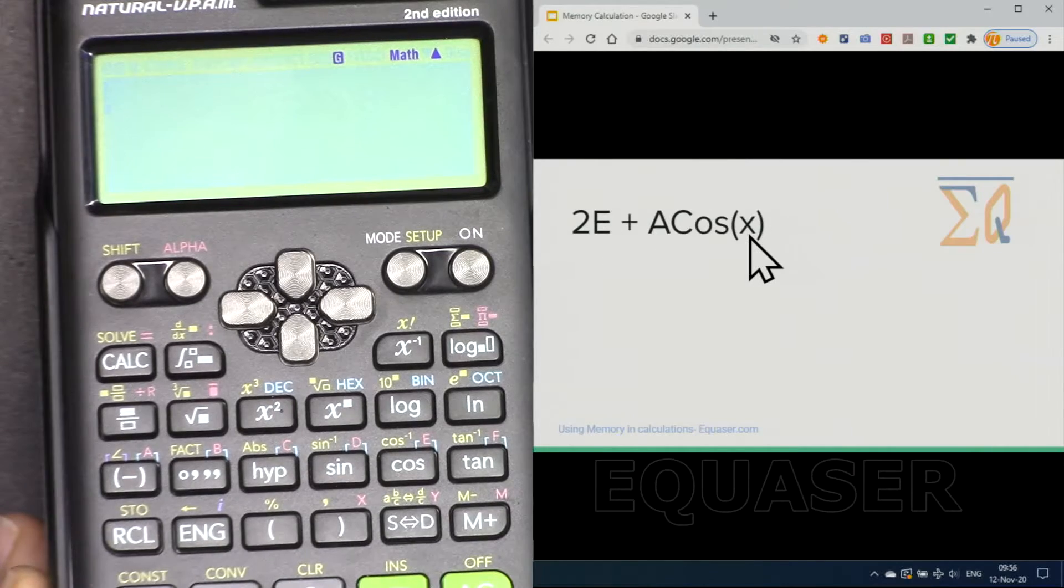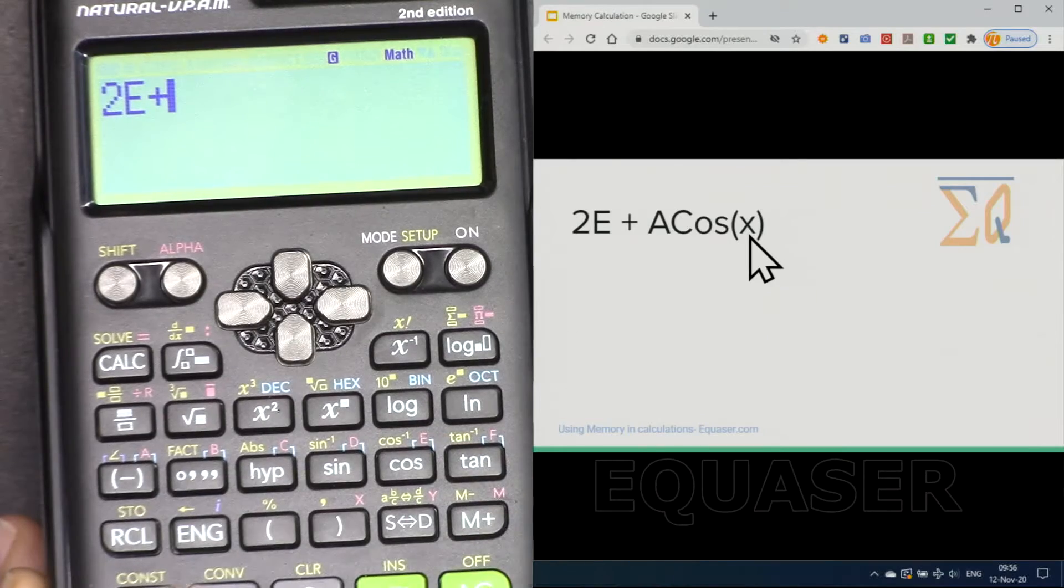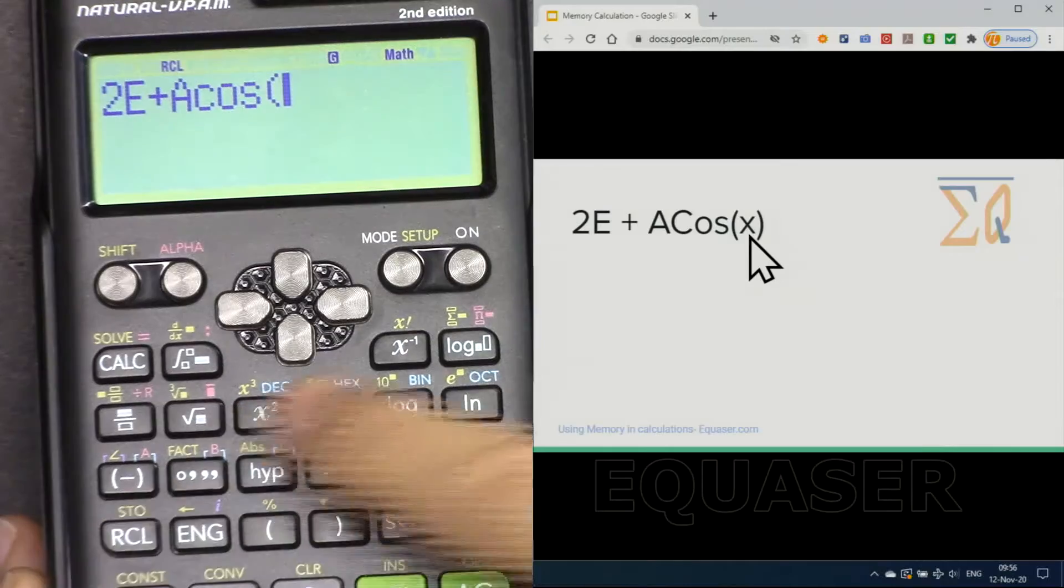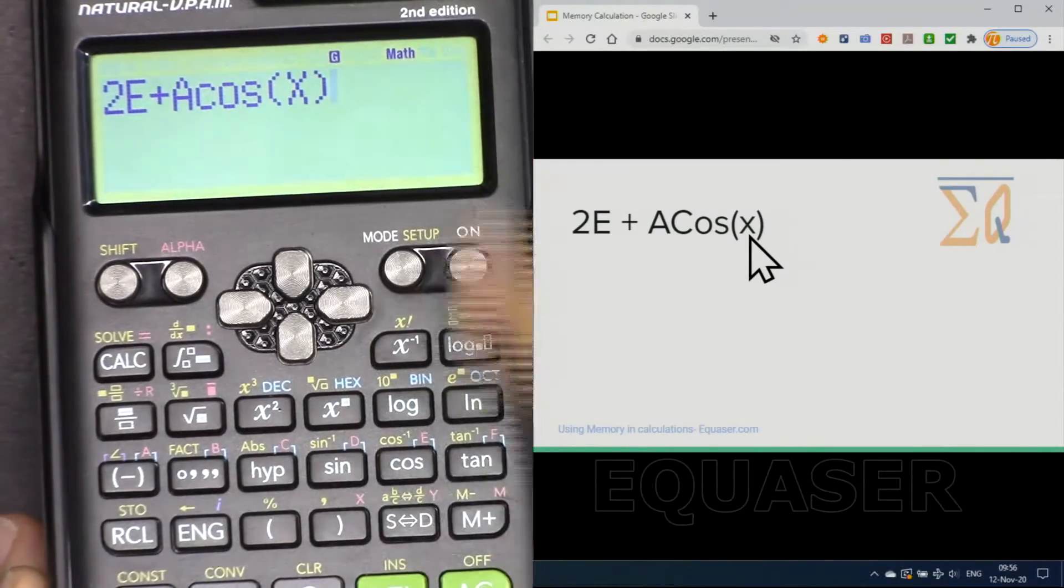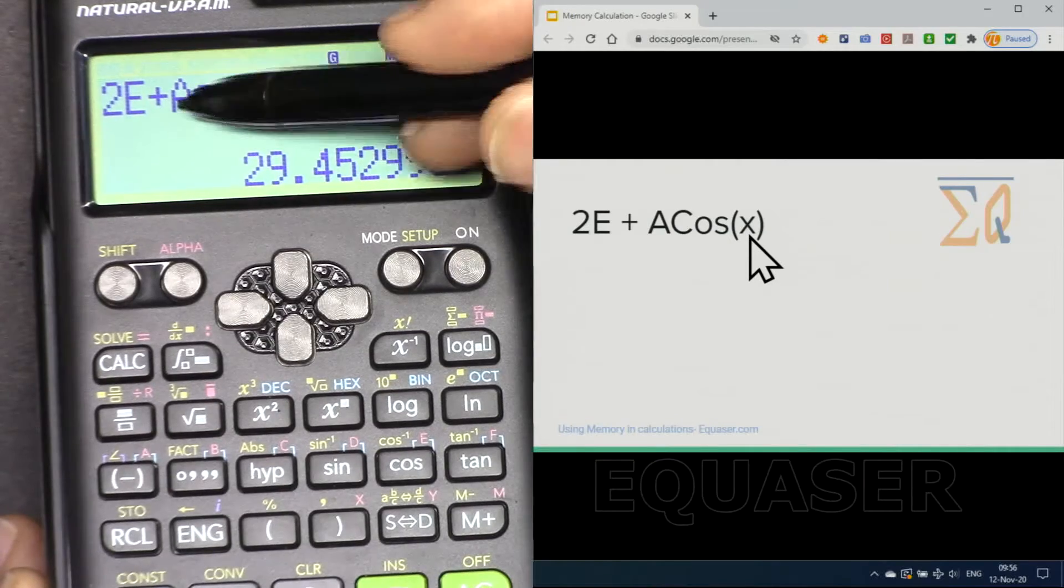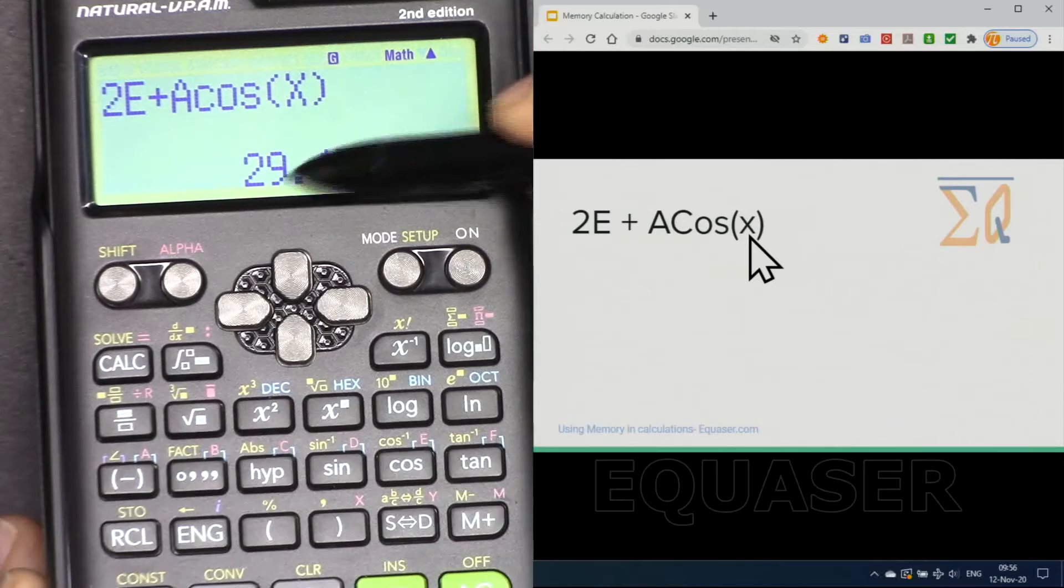2 recall E plus recall A cosine of recall X, close it and then press equal sign and this is the calculated value. Remember this is in degree and the value is calculated based on the degree.